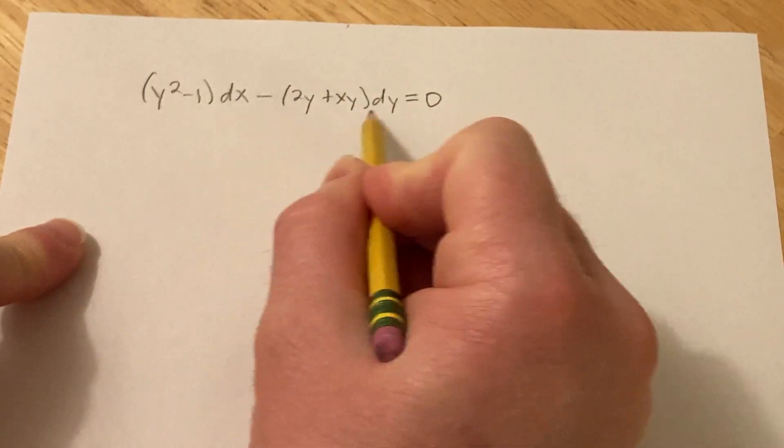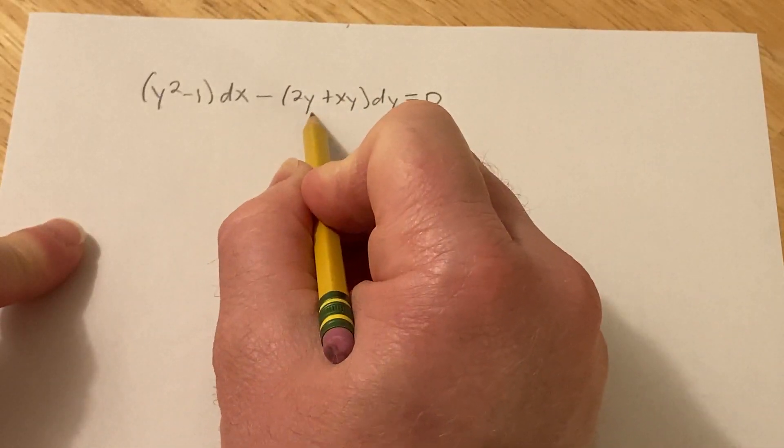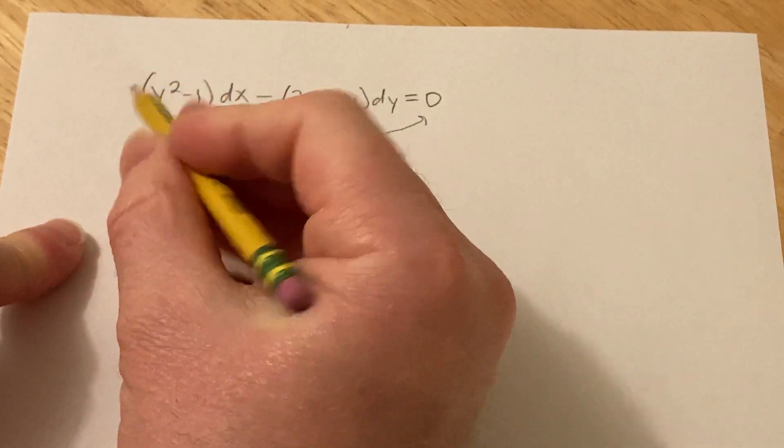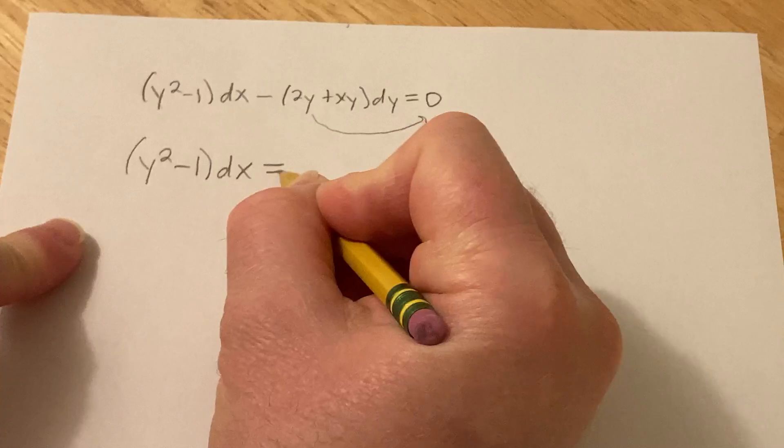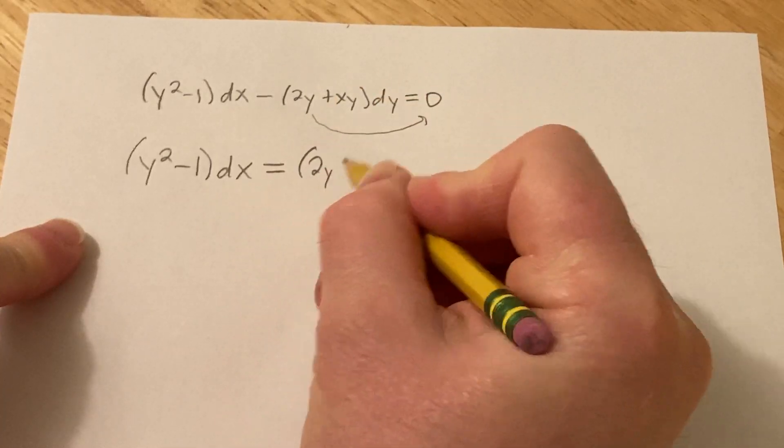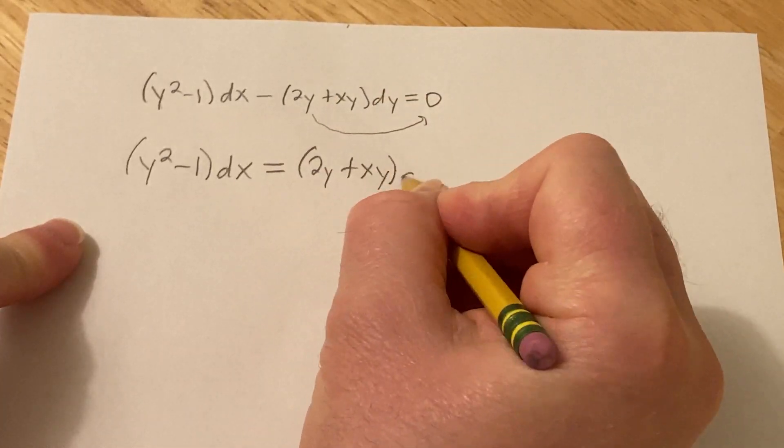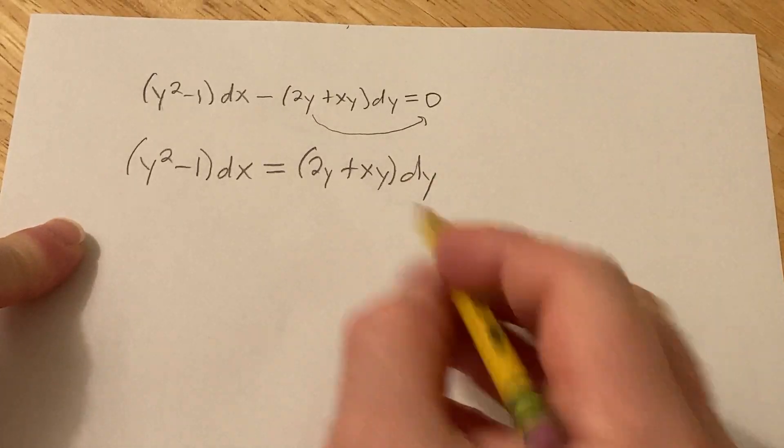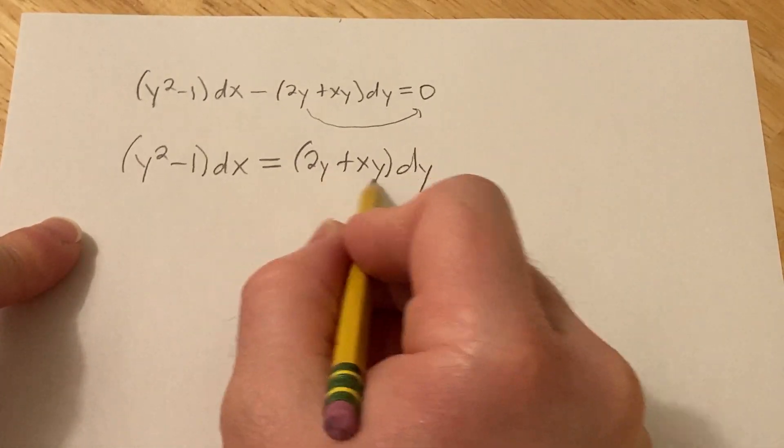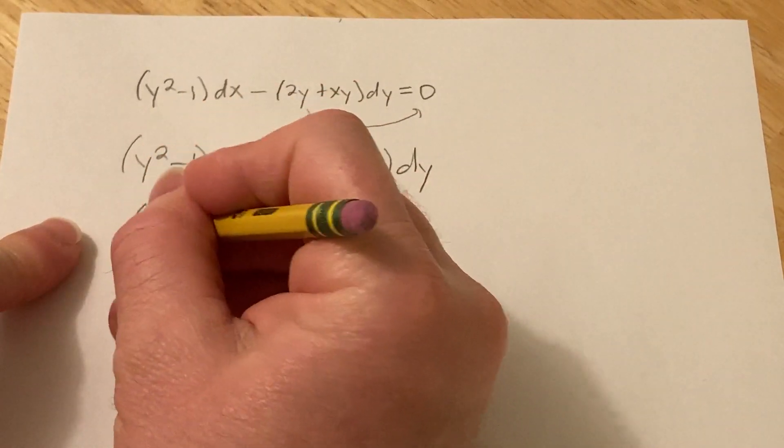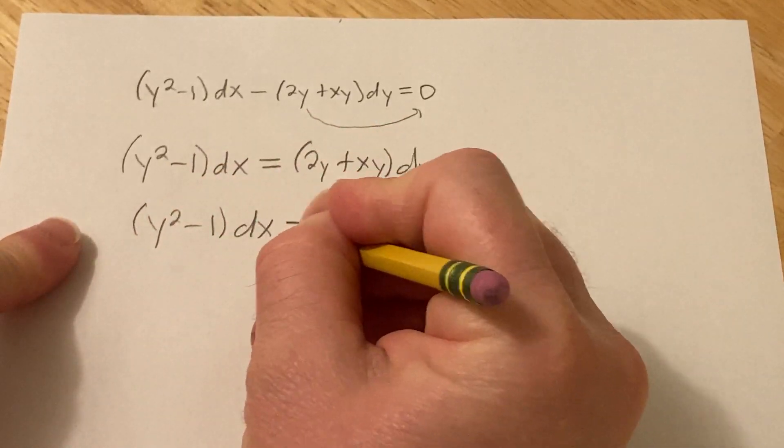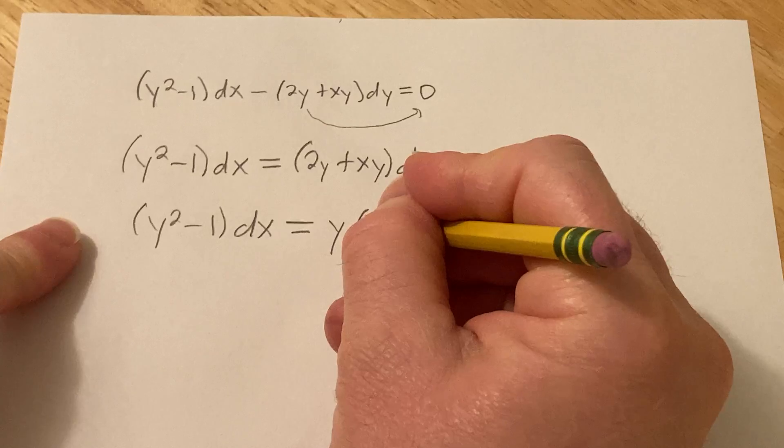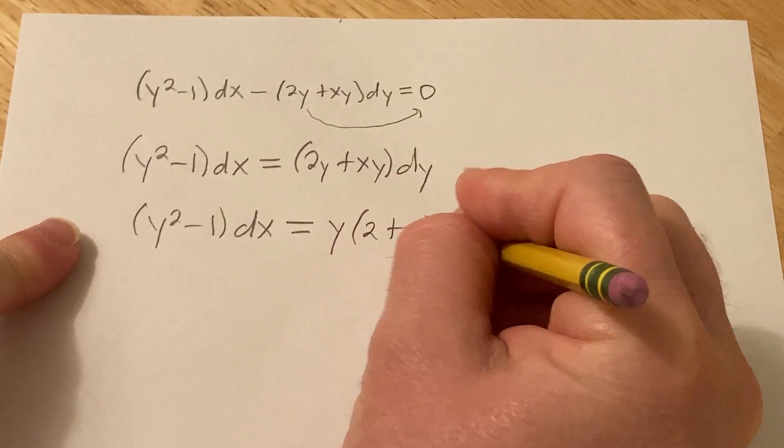So we'll start by adding this to both sides. So I'm basically just going to take this over here and make this positive. So we have y squared minus 1 dx equals 2y plus xy dy. And you'll notice that you can factor out a y here, so I'm going to go ahead and do that. So we have y squared minus 1 dx equals y parentheses 2 plus x dy.